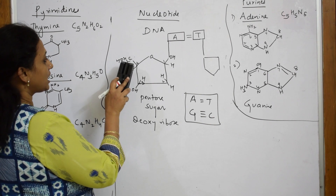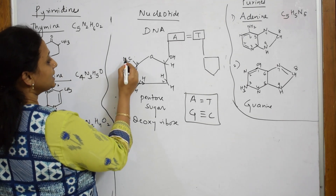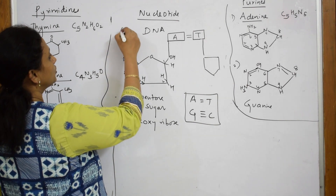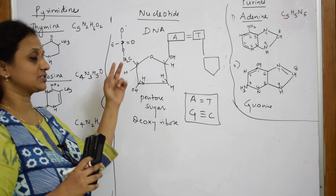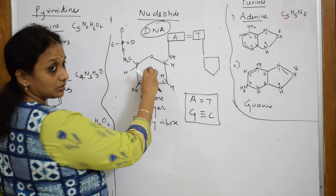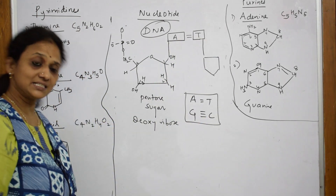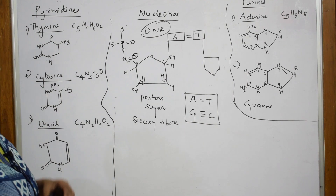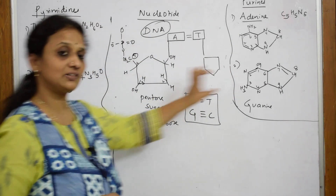I am done with pentose and done with base pairs. Now I have to show the phosphate linkages. Phosphate, exactly by condensation of a water molecule, forms the phosphodiester bond. In a nucleotide it has three parts: pentose sugar, base pairs — A always links with T, G always pairs with C — and at the fifth carbon position you have the phosphate linkage.